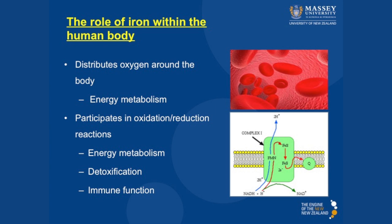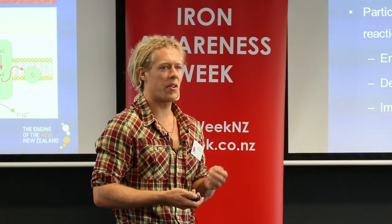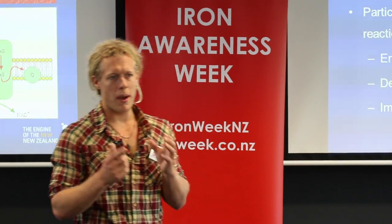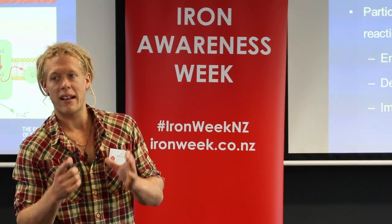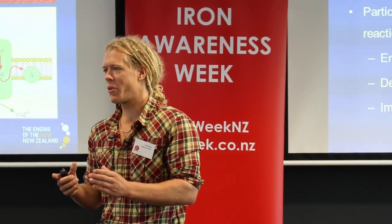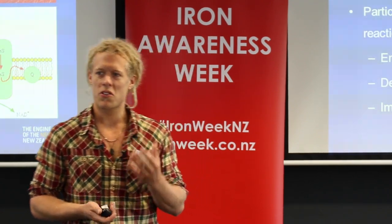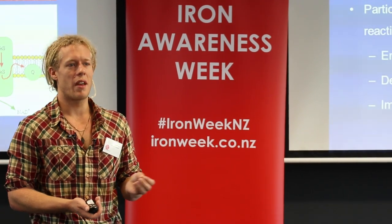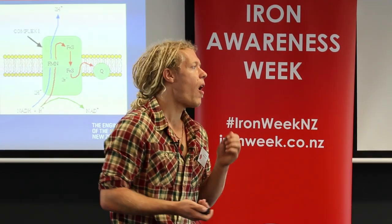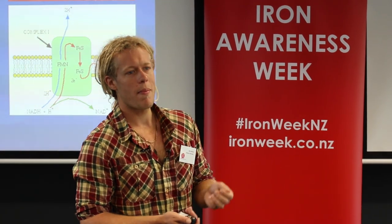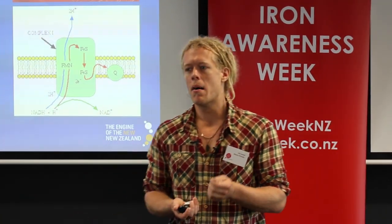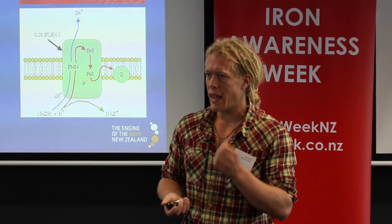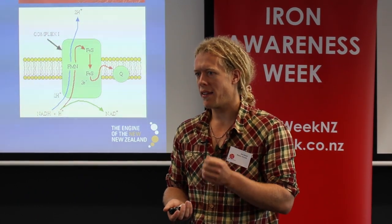The role of iron within the body — a few of the roles anyway. Iron is involved in distributing oxygen around the body. Iron is bound within a porphyrin ring, which makes heme iron. Heme iron is bound within hemoglobin; it binds oxygen in high oxygen concentration areas like the lungs and distributes the oxygen to tissues that require oxygen to make energy. Oxygen is required to make energy — ATP — by the cells, and we need iron to get that oxygen to the cells to make the energy.